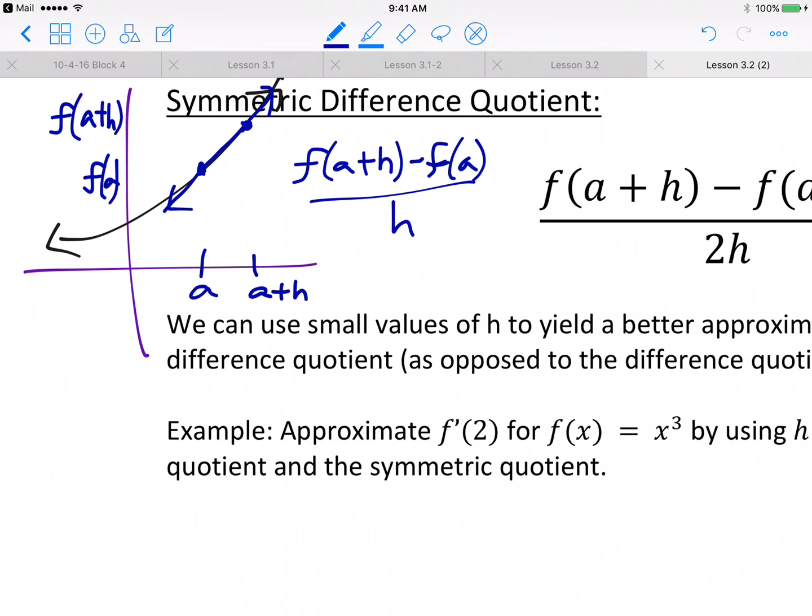But as these two points converge, or I should say, as the second point gets closer to the first point, with the h value becoming zero, then you could approximate the slope of the tangent line at x equals a.